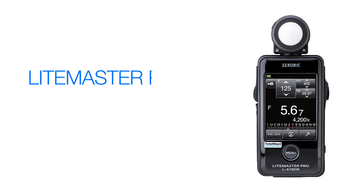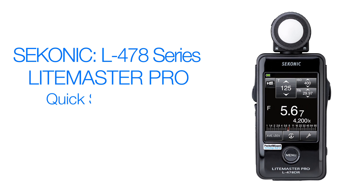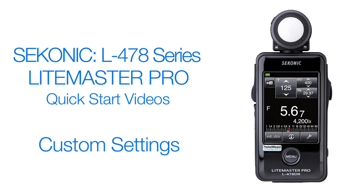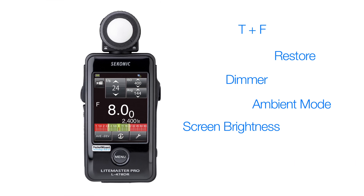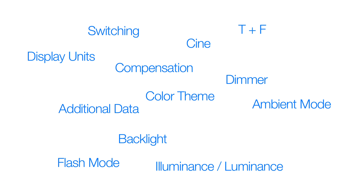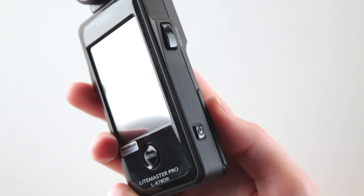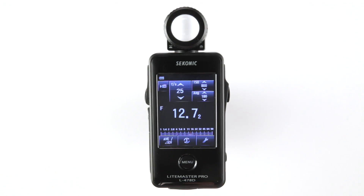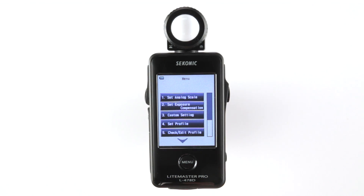The Sekonic LightMaster Pro L478 series has 14 custom settings and preferences to accommodate the way you want to use the meter. You can select the functions you want and hide the ones you don't. These preferences are automatically saved even if you replace the batteries or turn the meter off. You can enter the custom setting mode by pressing the menu button. The custom settings menu is the third choice in the list and can be selected by simply touching the custom setting button.